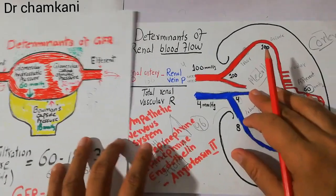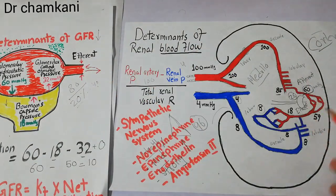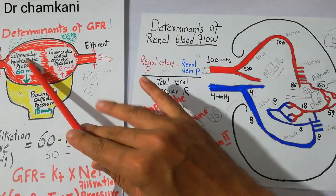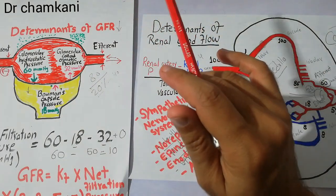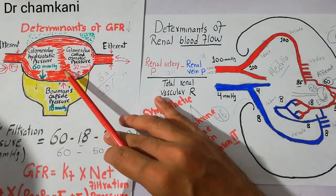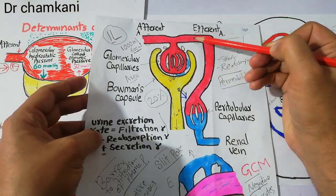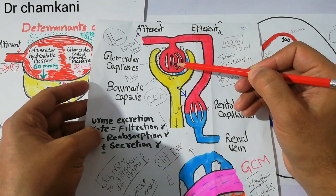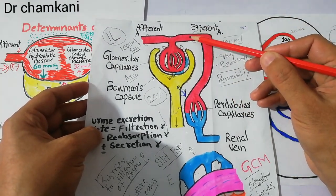Angiotensin 2 is one of those substances which preferentially constricts the efferent arteriole. Here at the efferent arteriole, with the glomerular capillaries upstream, the role of angiotensin 2 is to momentarily increase the GFR due to increased glomerular hydrostatic pressure while also decreasing blood flow. As shown in the diagram, angiotensin 2 constricts at the efferent level, increasing filtration pressure and GFR, while resistance is raised and blood flow beyond this point is reduced.